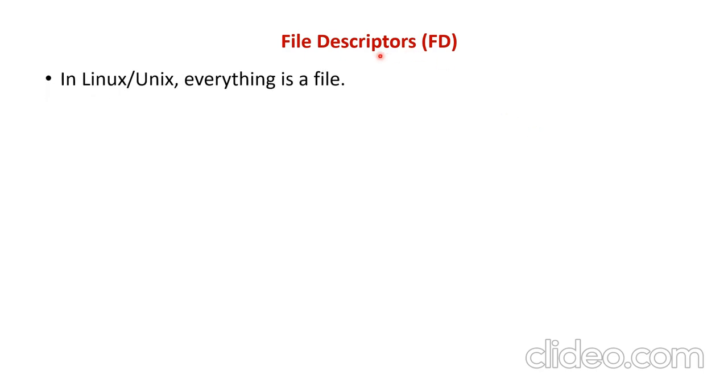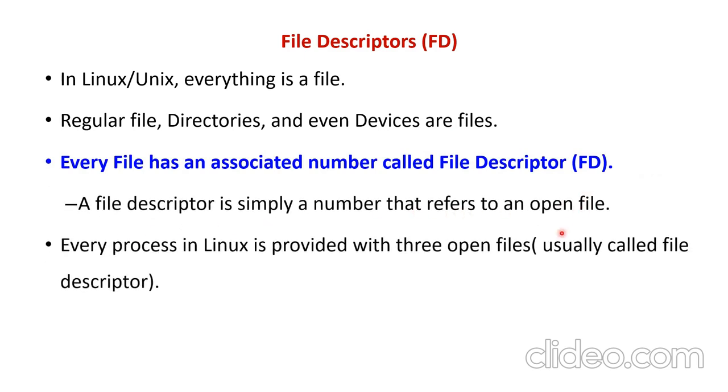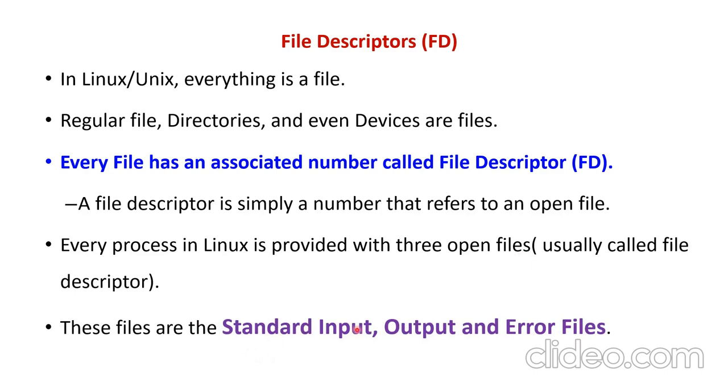Next comes an important concept called file descriptor. In Linux or Unix, everything is a file. Regular file, directories and even devices. Everything on Linux is files. Every file has an associated number called file descriptor, FD in short. It is nothing but a number that refers to an open file. Every process in Linux is provided with three open file descriptors called standard input, output and error files. These are the three types of files.